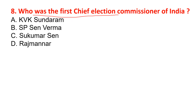Who was the first Chief Election Commissioner of India? Options are given here. The correct option is option C — Sukumar Sen.